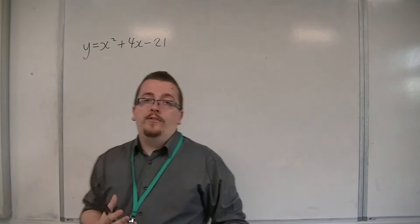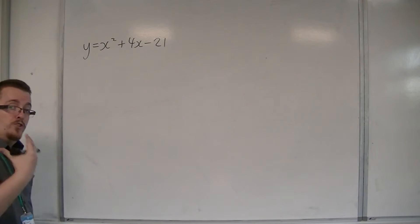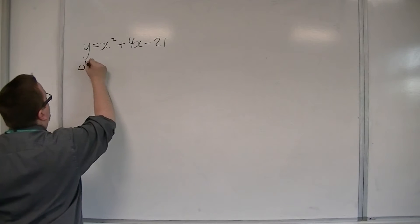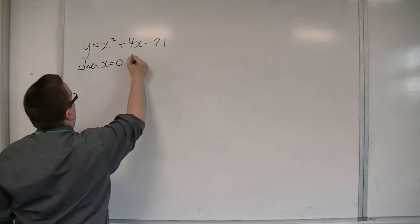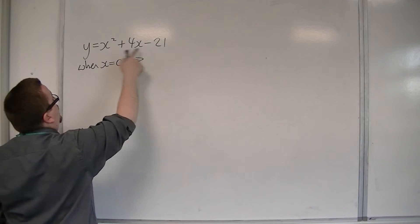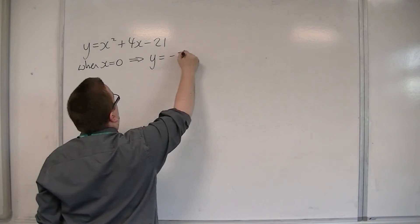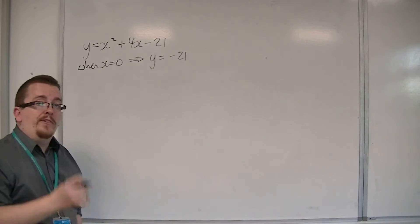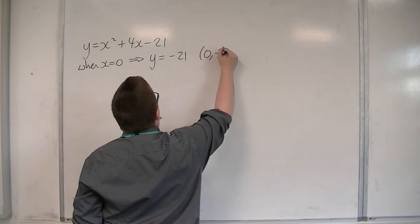We can also use the techniques that we've learned for straight line equations. So when x is 0, I can substitute in x is 0 to find out what y is equal to. And y would be equal to minus 21. That means it crosses the y-axis at minus 21.